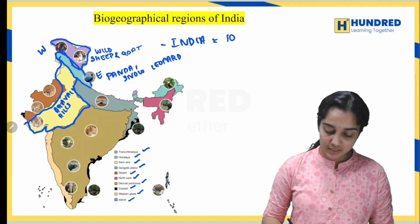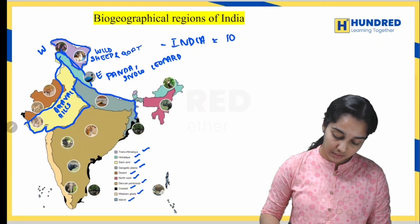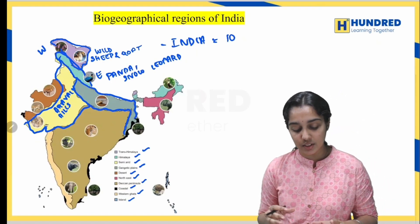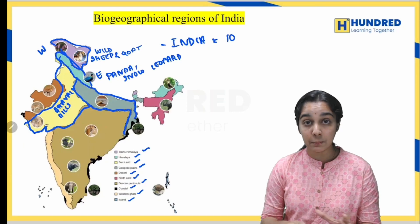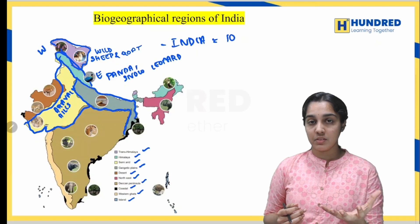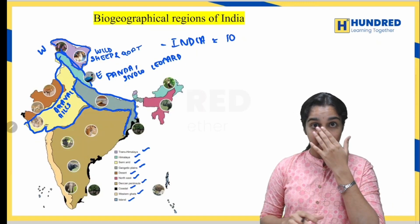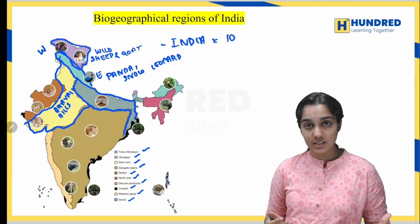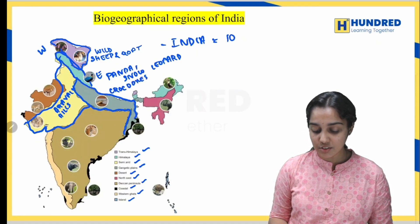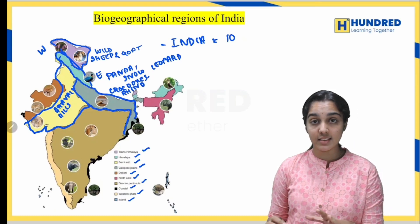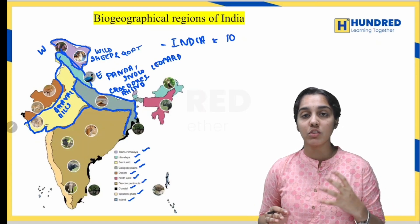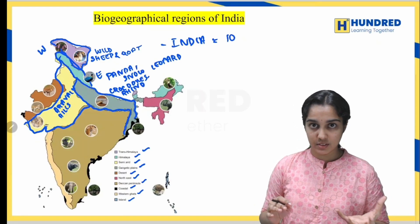Next are the Gangetic Plains, shown in green on the map. This covers regions like Uttar Pradesh and Bihar. The Gangetic Plains is a fertile area. The species present here include crocodiles and rhinoceros.